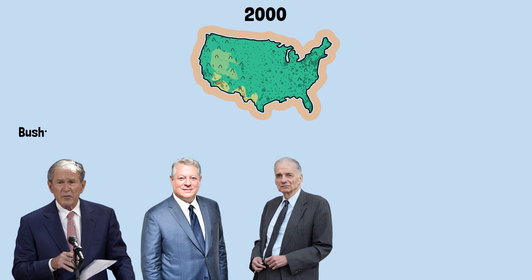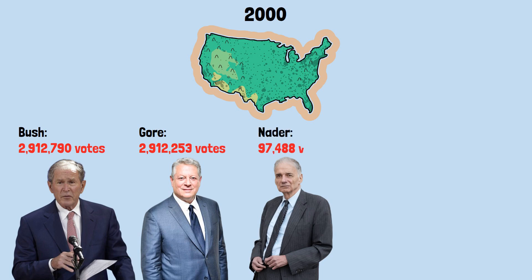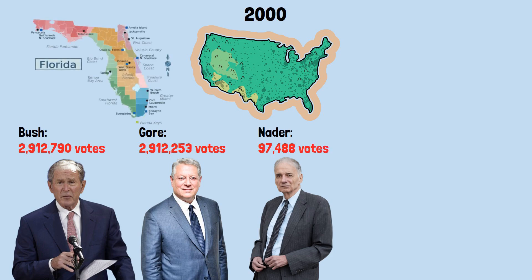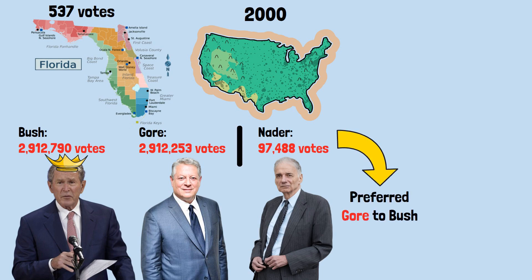In the Florida vote: Bush got 2,912,790 votes; Gore got 2,912,253 votes; Nader got 97,488 votes. Bush wins Florida by 537 votes, and Florida's electoral votes give Bush the presidency. But most Nader voters preferred Gore to Bush — if Nader hadn't run, Gore almost certainly wins Florida and becomes president.